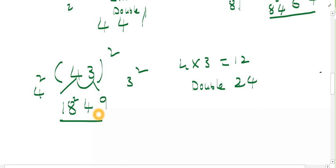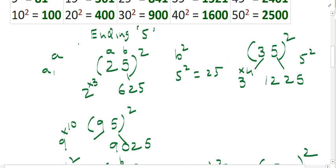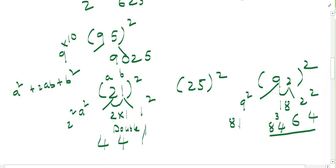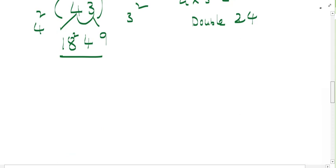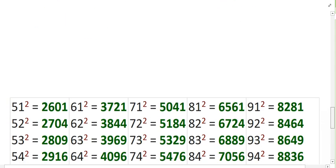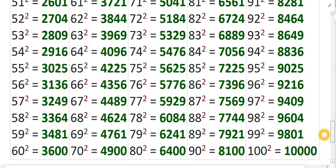So in this way you can do this method. So I taught you 2 methods. One is the method ending with 5, and second method is based on this, A square plus 2AB plus B square. So friends, I hope you like these techniques here. And you can do up to 100.